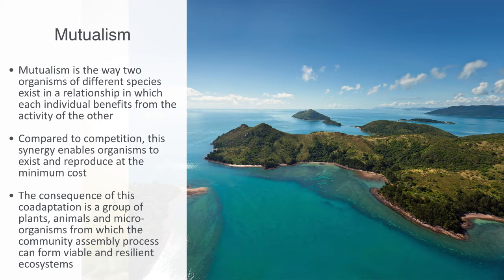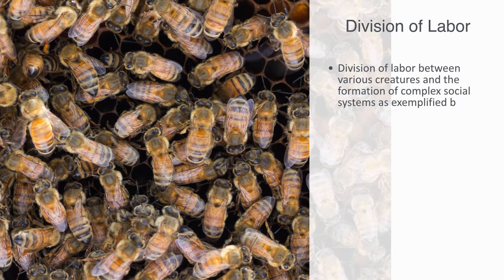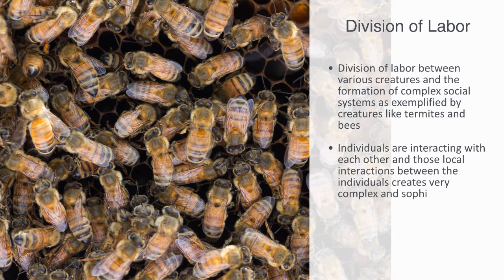Positive synergies can be very effective in enabling the division of labor between various creatures and the formation of complex social systems, as exemplified by termites and bees. In eusocial insects we can see advanced division of labor, such as sterile insects feeding and guarding the small number of colony members able to reproduce. With positive synergies we can also get emergence — a beehive is a complex system where local interactions between individuals create very complex and sophisticated behavior at the aggregate level, where the social group as a whole comes to have its own integrated processes.